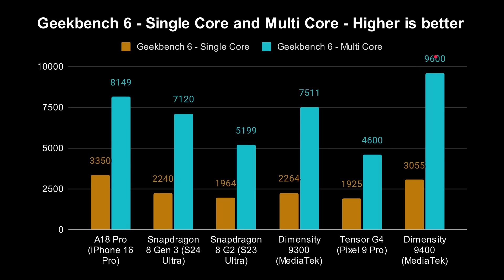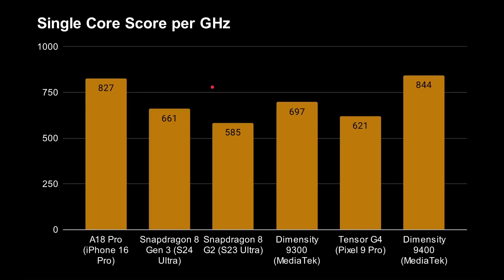Interestingly, MediaTek are claiming the Dimensity 9400 is faster in the multi-core score at 9600 compared to Apple's 8149 — which is reasonable because the Dimensity is octa-core whereas the Apple is hexa-core. When we look at single-core score per gigahertz, the iPhone's latest chip runs at just over four gigahertz whereas the MediaTek runs at 3.62 gigahertz. If you work out speed per gigahertz, the X925 actually has better IPC than the A18 Pro at the same clock speed — hypothetical of course, but interesting. The 9300 and 9400 numbers come from MediaTek, not from me.